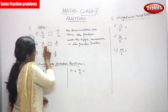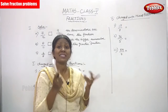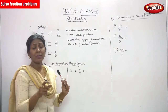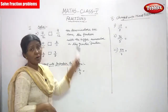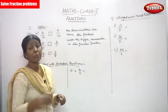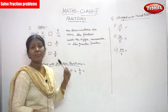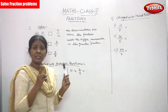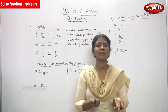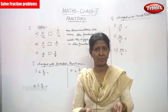If the denominators are the same, you have to look only at the numerator — which number is greater than the other. The denominators are the same, so the fraction with the bigger numerator is the greater fraction. The numerators are 7 and 9. Which number is bigger? 9 is a bigger number. So 9 by 12 is the greater fraction.